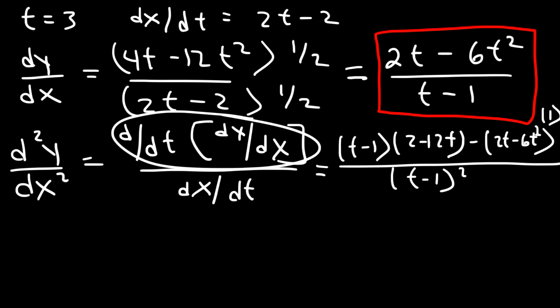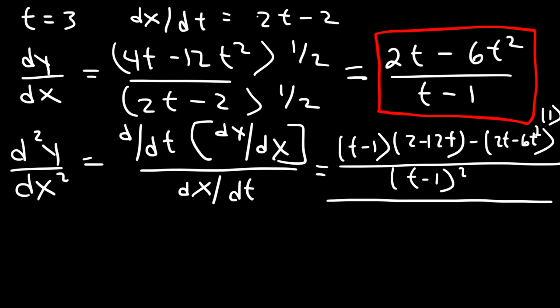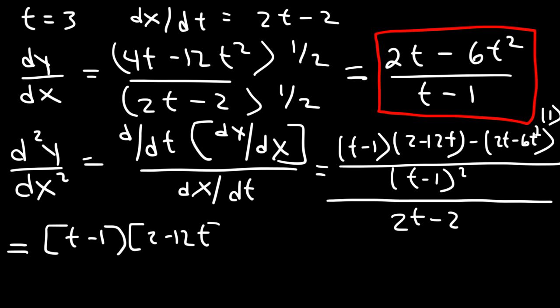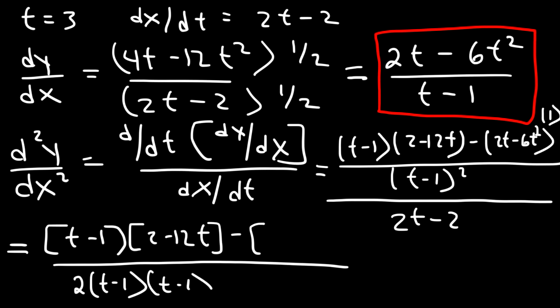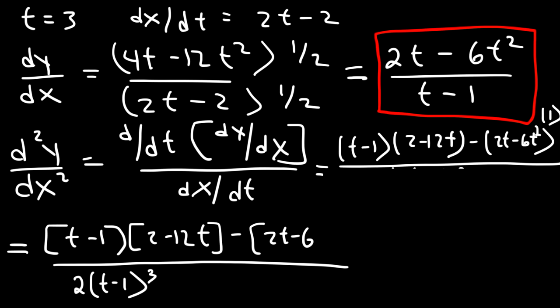That's the derivative of dy/dx, and we need to divide it by dx/dt, which is 2t minus 2. So this is going to be t minus 1 times 2 minus 12t, then minus — on the bottom it's t minus 1 squared times 2t minus 2. Now, 2t minus 2, you can take out a 2, so it becomes t minus 1 times the other t minus 1 squared, which you can write as 2 times t minus 1 cubed. And then it's going to be 2t minus 6t squared on top. That is the second derivative.